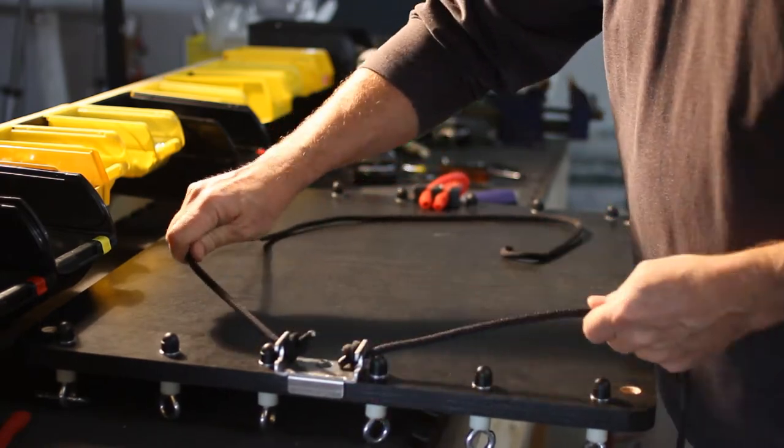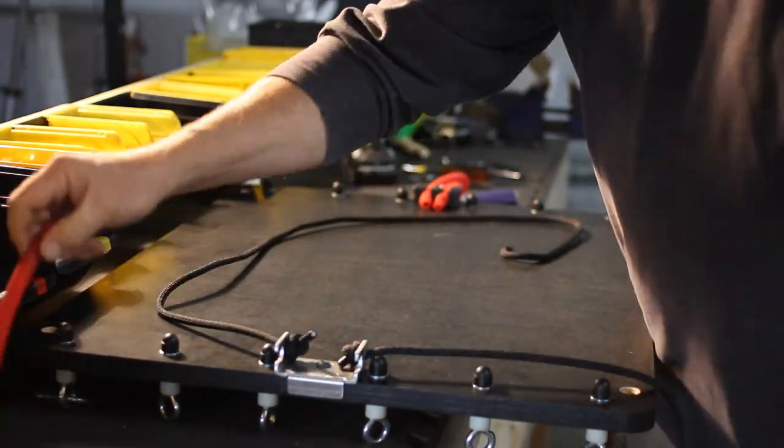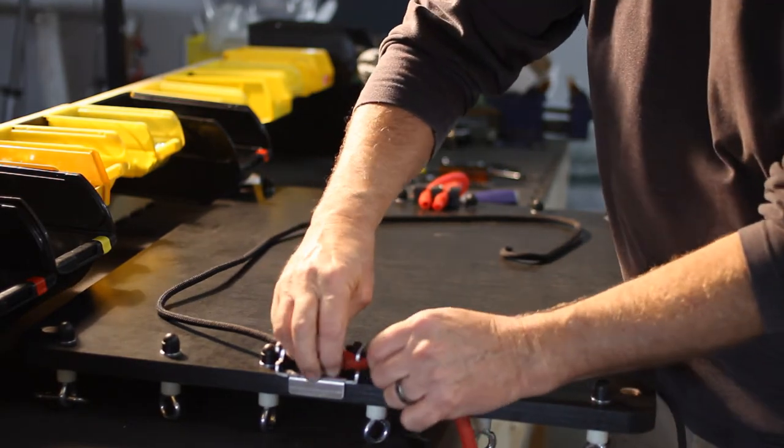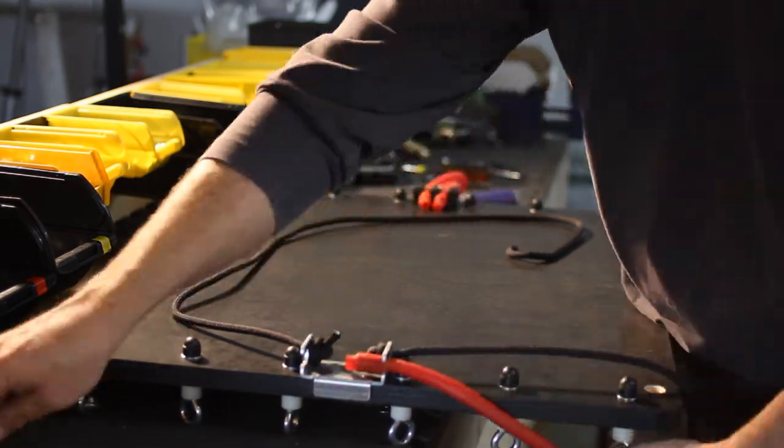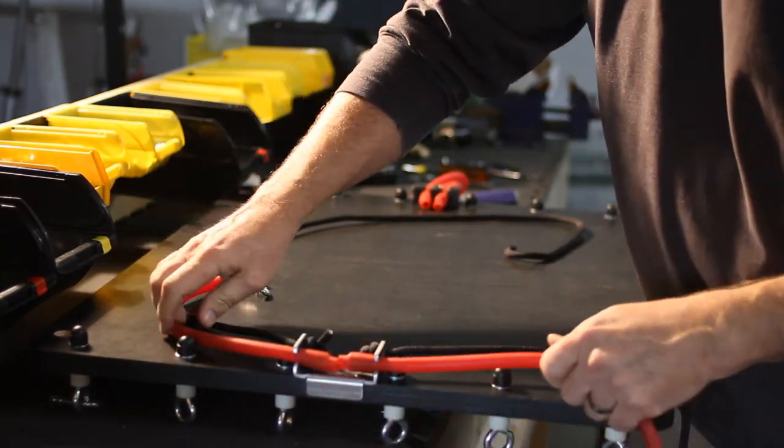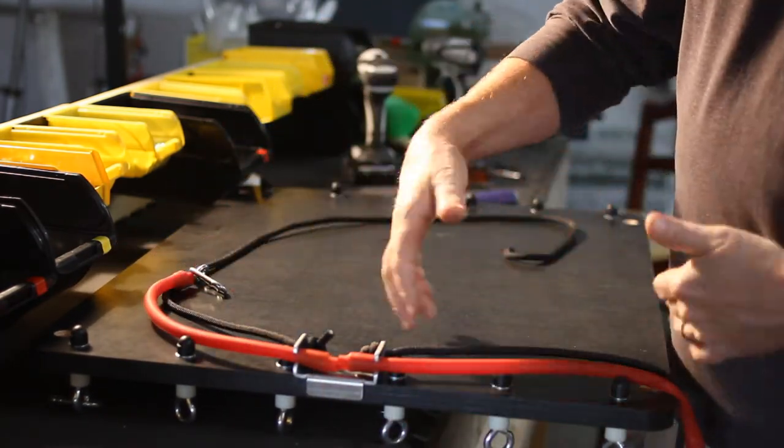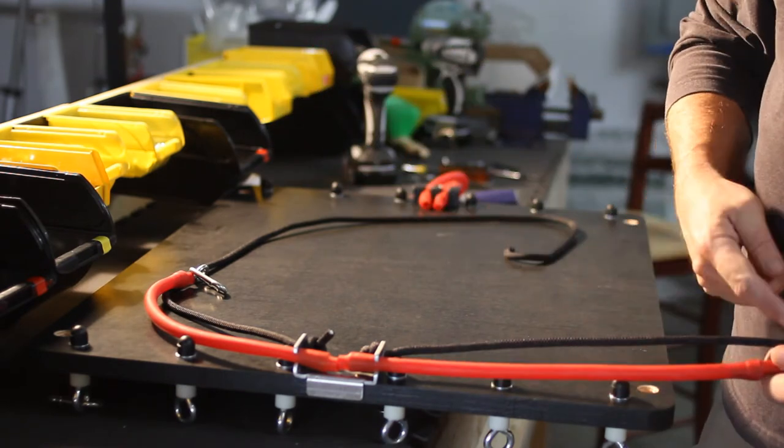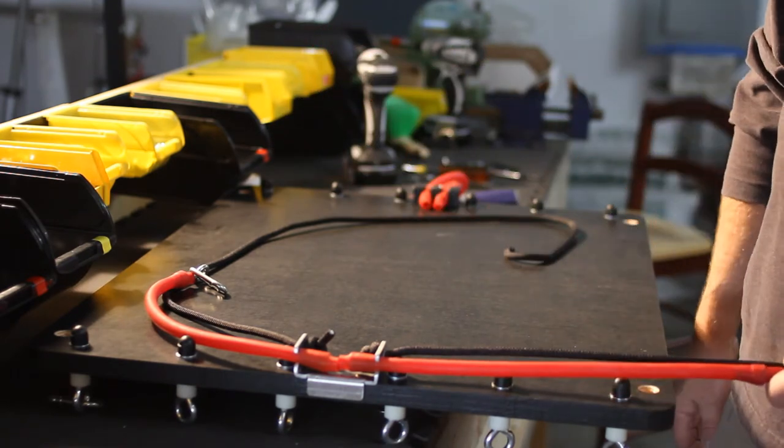So we have our arrestor ropes through like this, and then our red bungee cords simply snap in like so and secure like that. So go ahead and put your board back on, hang it on your frame and attach your arrestor ropes and bungee cords and you're good to go.